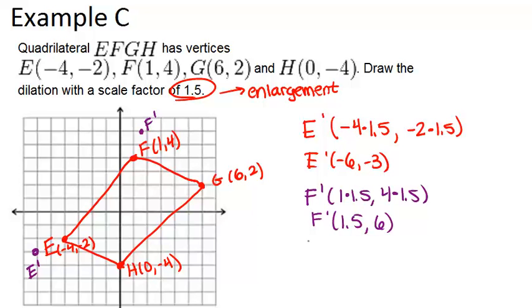Next, let's do G. G prime is going to be 6 times 1.5 and then 2 times 1.5, which gives us (9,3). So that's right here. A little bit off the screen of the graph paper, but that's okay.